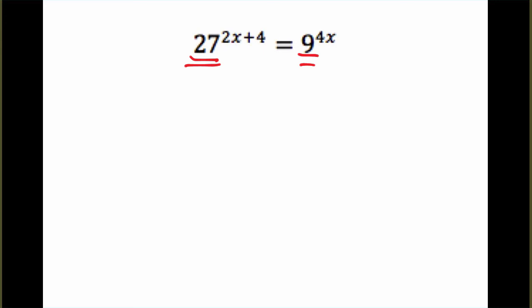In this case, 27 can be thought of as 3 to the 3rd. And then I don't change that 2x plus 4 at all. And 9 can be thought of as 3 squared.